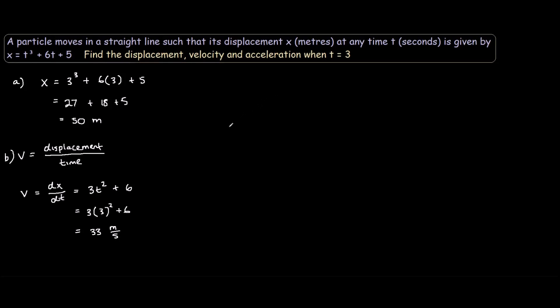Now to answer the third part of the question, the acceleration, we have to recall that acceleration is simply the measure of how quickly the velocity of an object changes. So acceleration would be the change in velocity divided by the time.